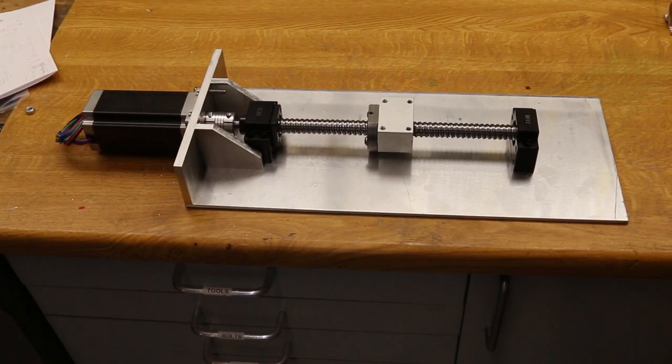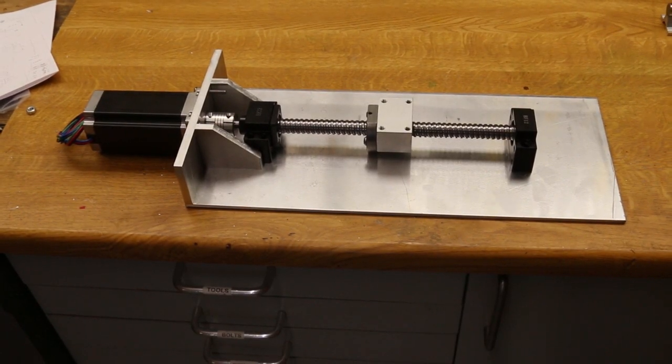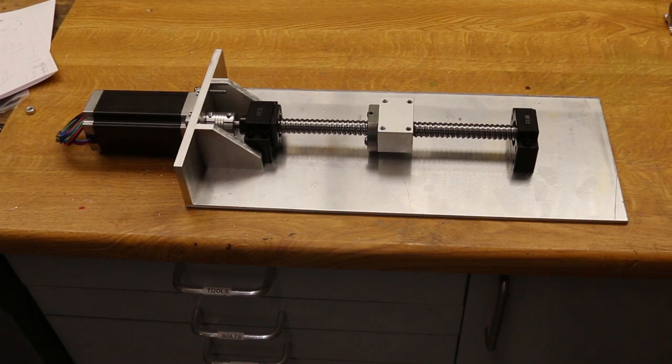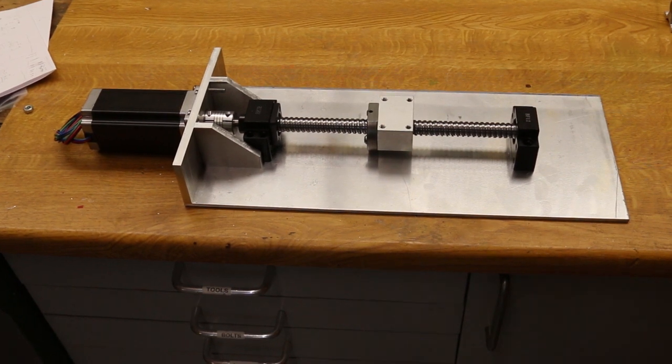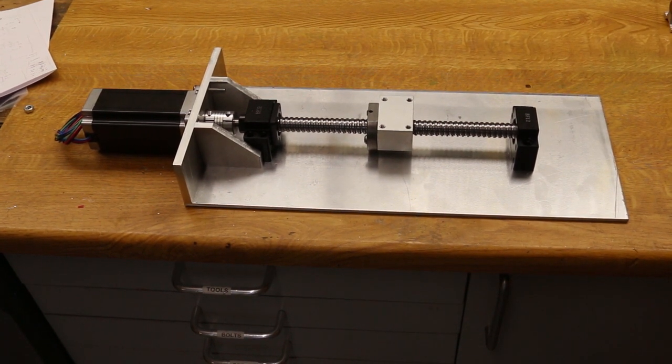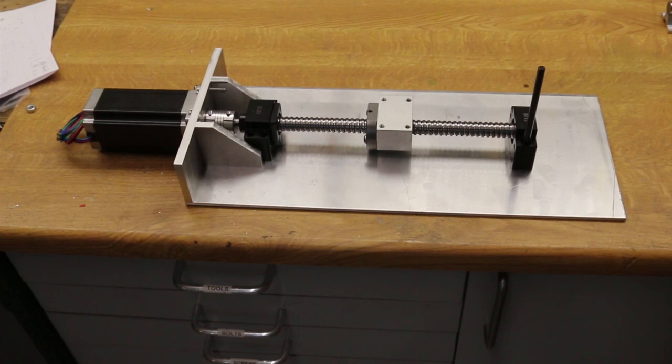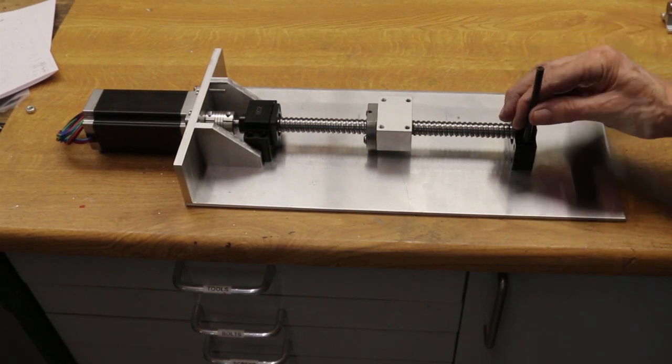Next step is to set up the sliding carriage. This was fabricated in the same way. The task here is to align the ball screw down the center. Everything else will be marked out from here. The mounting bolts can then be set out using a transfer punch.